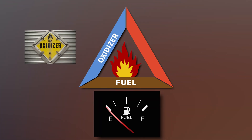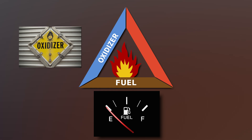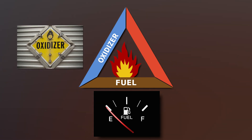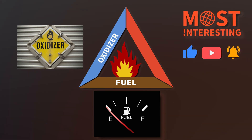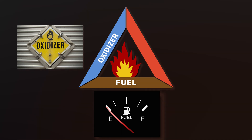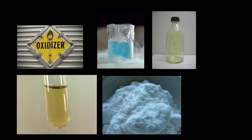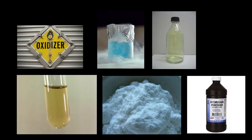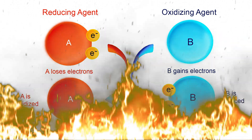Additionally, an oxidizer is necessary to support the chemical reaction that produces flames. While oxygen is commonly the oxidizing agent, alternative compounds can also serve this function. This oxidizer may include oxygen from the surrounding air, as well as substances like chlorine, fluorine, potassium chlorate, hydrogen peroxide, and nitric acid. These substances either provide or act as a source of oxygen, enabling combustion.